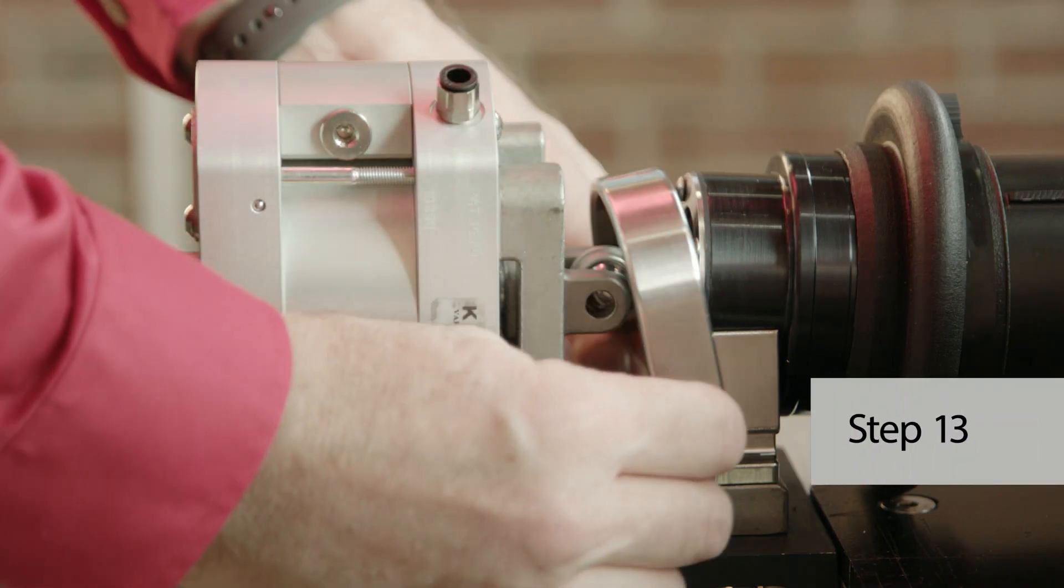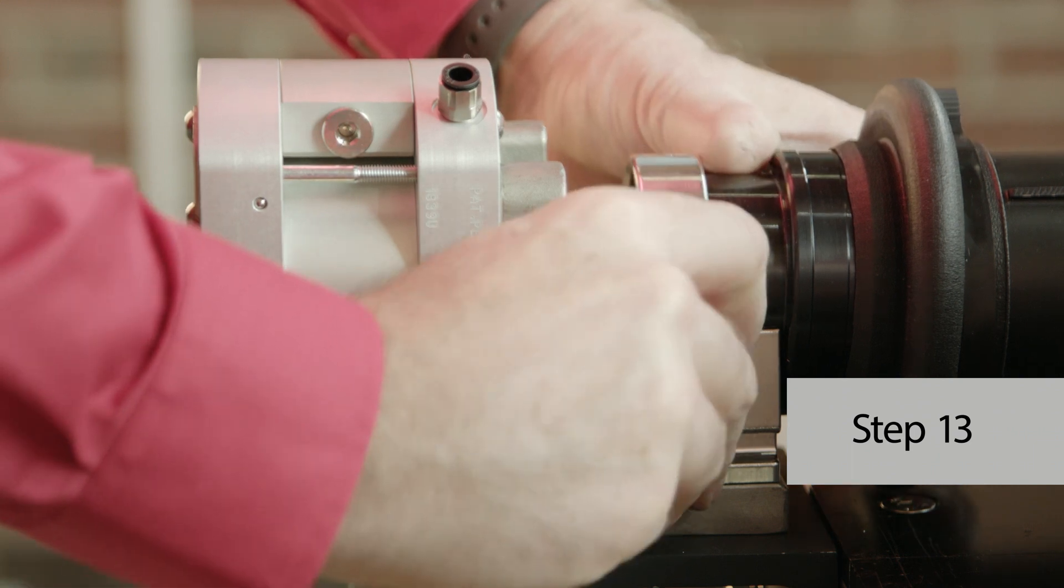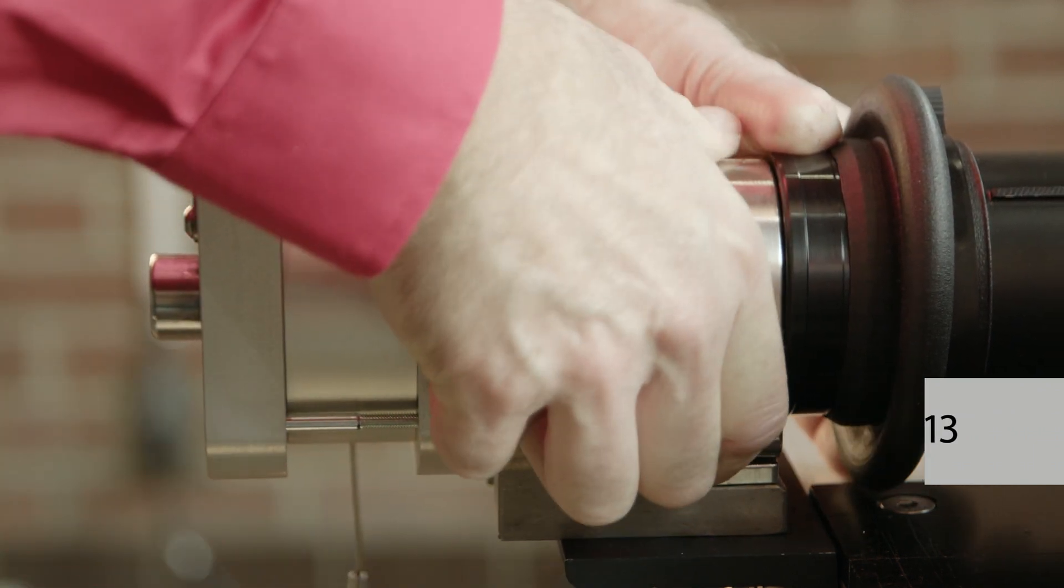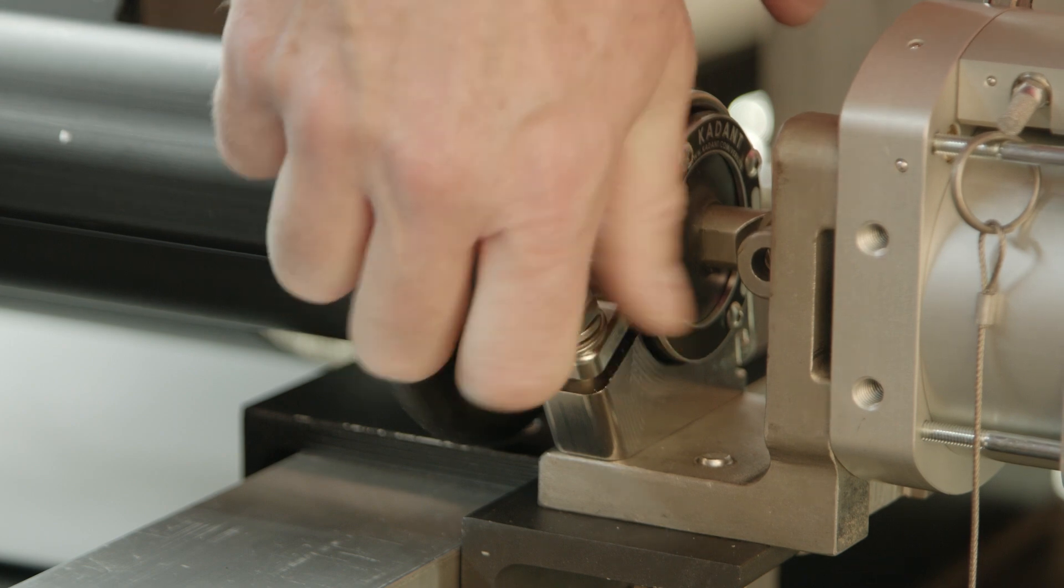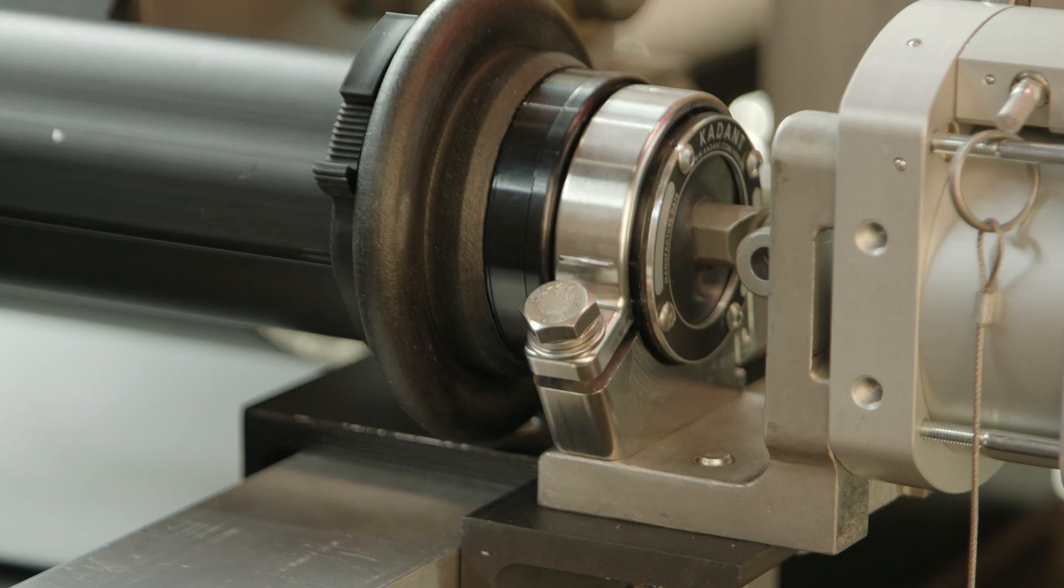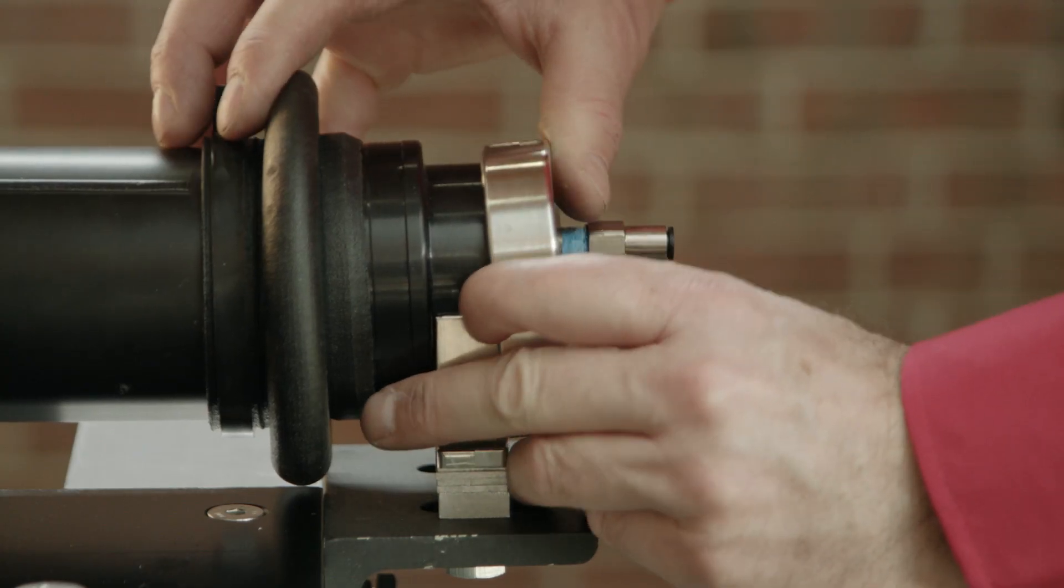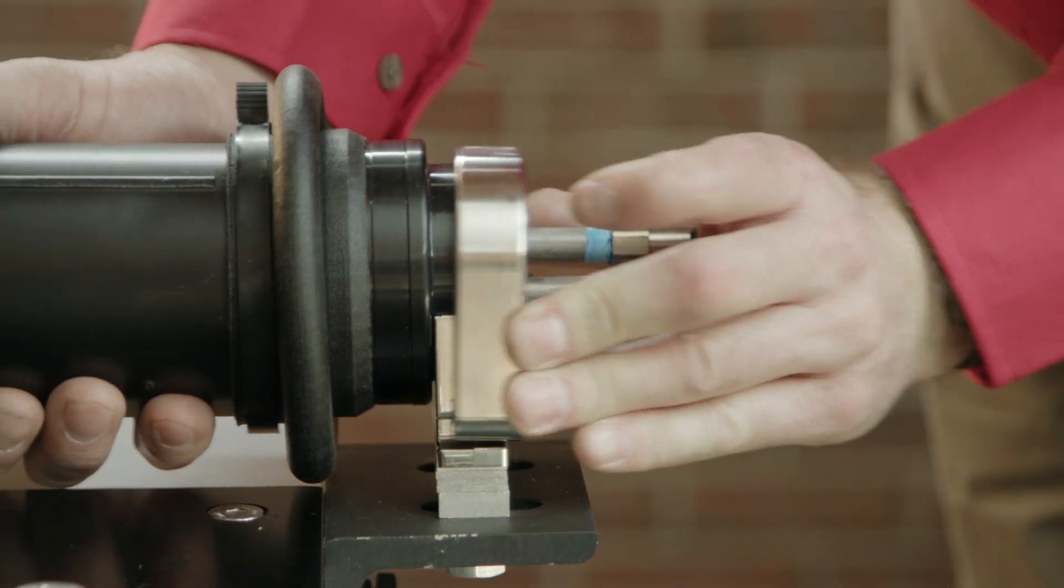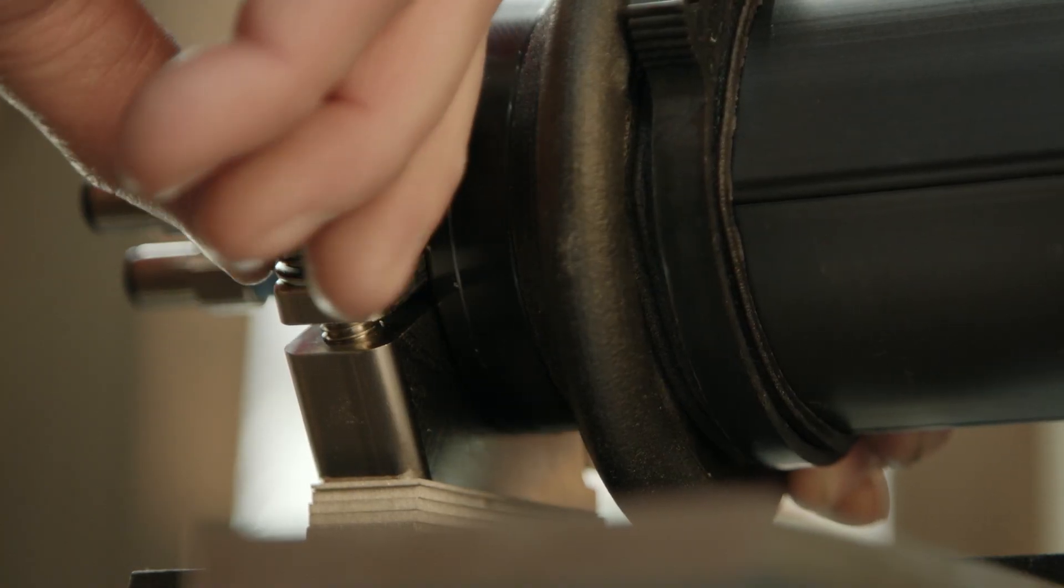Step 13, fasten each bearing clamp top half, the clamping portion, to the bearing clamp cradle using supplied fasteners while ensuring the bearing assemblies are fully seated into the bearing clamps. Leave hand tight as you will be adjusting the Verilite assembly during the setup and alignment procedure.